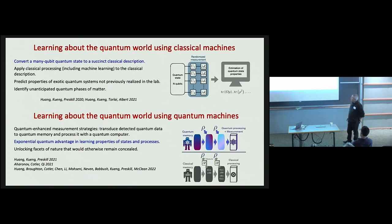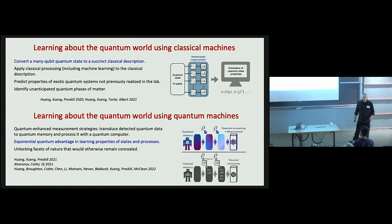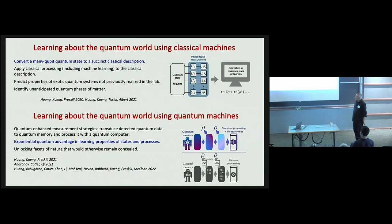I'm particularly interested in many-qubit quantum states which have the capacity to become profoundly entangled. It's possible to transform a many-qubit quantum state into a succinct classical description of the state. In doing so we discard a vast amount of information, but we can still retain much physically relevant information about the state, and generalize from that classical data to make predictions about quantum systems we haven't encountered in the lab, and learn to recognize quantum phases of matter we haven't seen before.